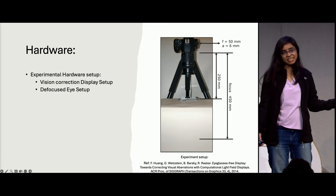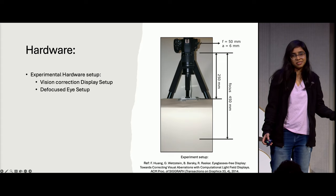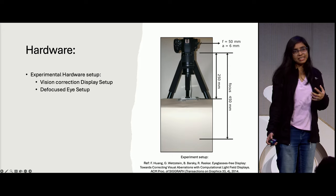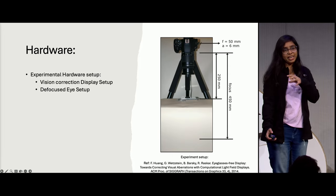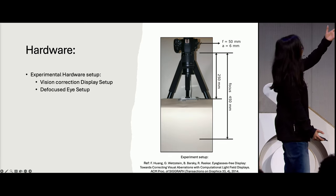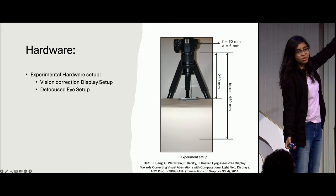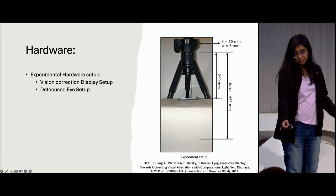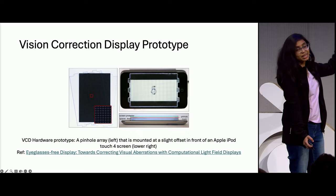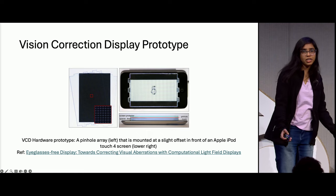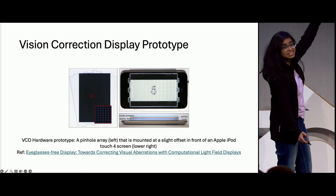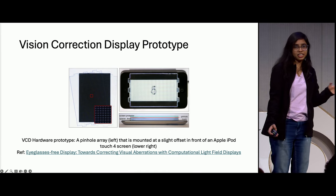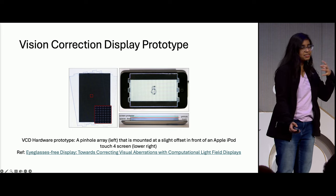For experimental setup to verify whether our software is working, we take a camera which acts as a human eye. We manually set the focus and adjust the parameters to simulate a defocused eye, and place the vision correction display at a distance. The vision correction display prototype has a screen with either a pinhole array or a lenslet array placed on top of it.